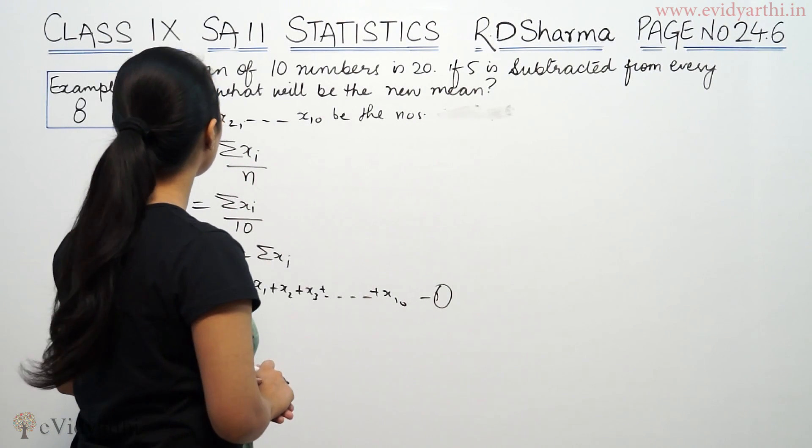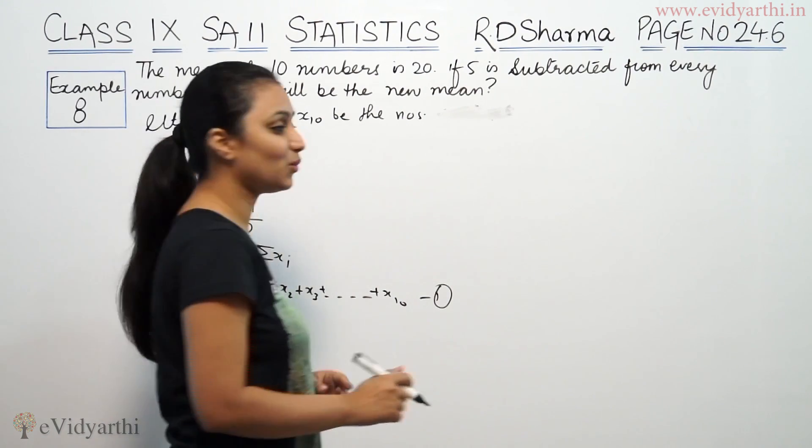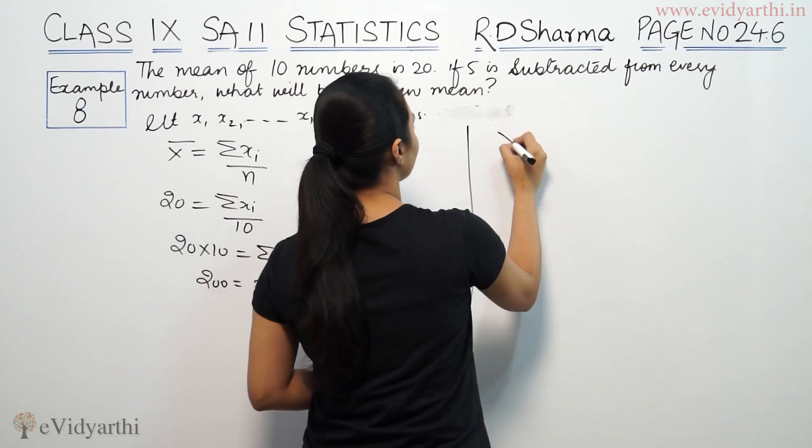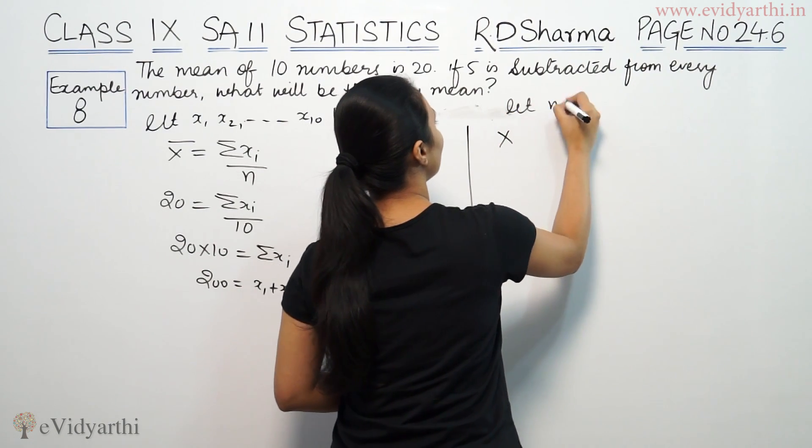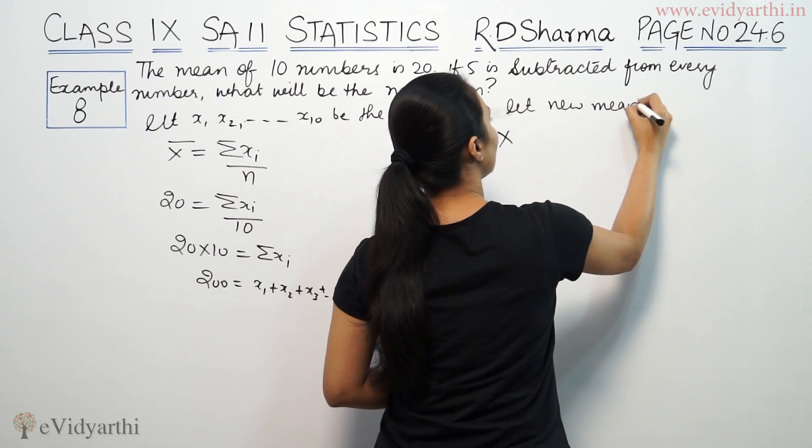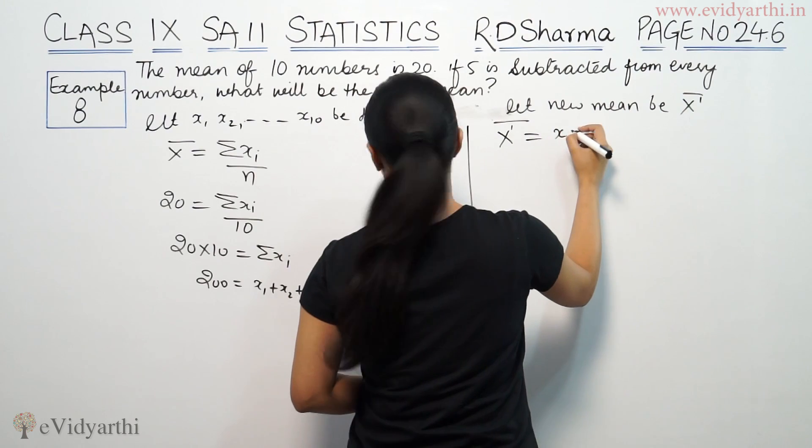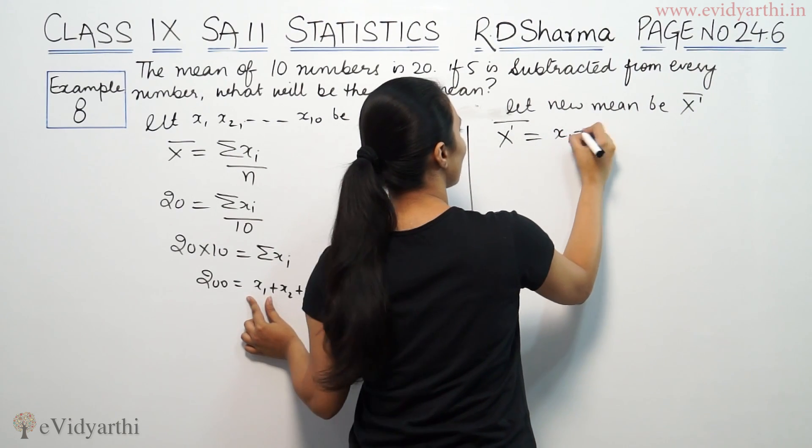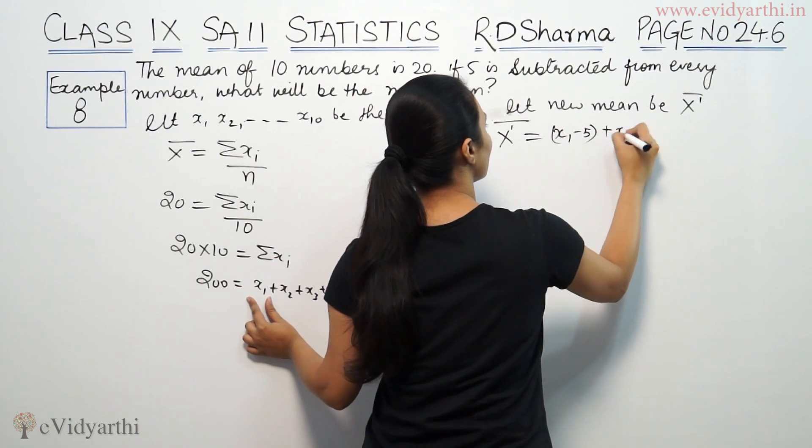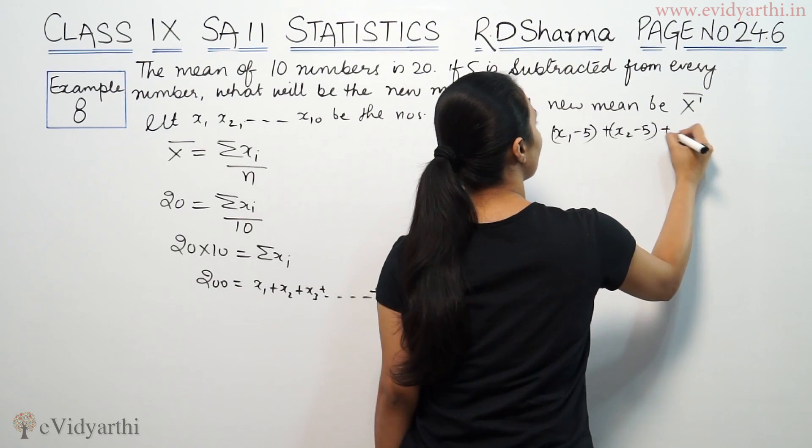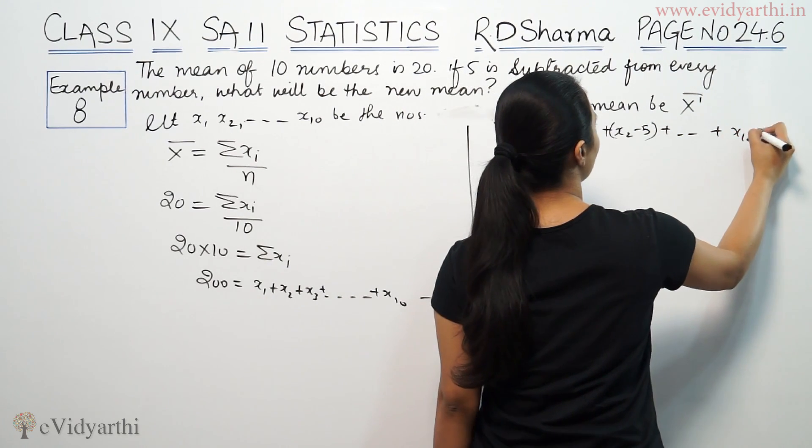Now we say that 5 is subtracted from every number. What will be the new mean? Let new mean be x̄'. x'1 = x1 - 5.